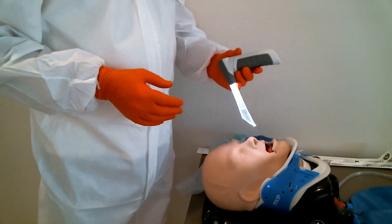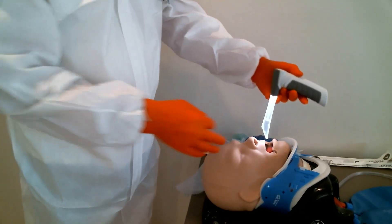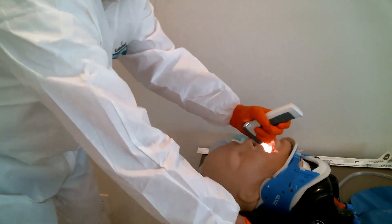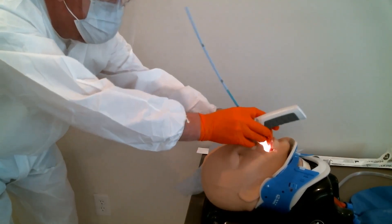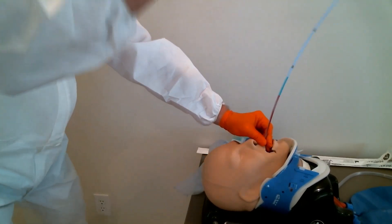So for this intubation, I'm going to use the V-scope coming in midline: tongue, epiglottis, notch. I'm staying a very safe distance away and I'm quickly passing the bougie through the vocal cords.